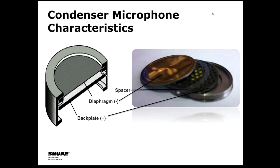Condenser microphones have additional electronics — a preamp circuit — that requires power to operate. If you're familiar with the term phantom power, that is a voltage typically supplied by the mixer or whatever device the microphone is plugged into that powers those electronics. If your next device in the chain doesn't have phantom power or it's not turned on, then that microphone won't work. A very common question we get is from someone who just bought a condenser microphone they think is broken because a dynamic mic works fine but the condenser doesn't. It's usually not broken — it's because phantom power hasn't been turned on or isn't present.